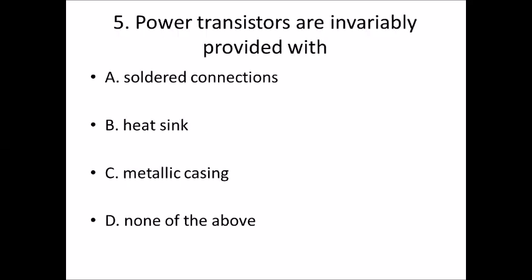Fifth bit: Power transistors are invariably provided with. Option A, shouldered connections. Option B, heat sink. Option C, metallic casing. Option D, none of the above. Answer is Option B, heat sink.